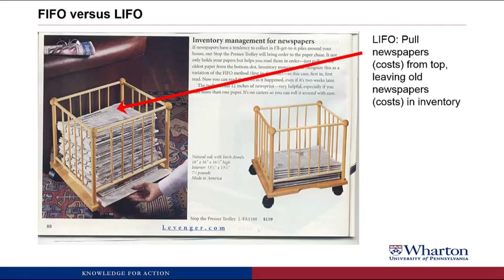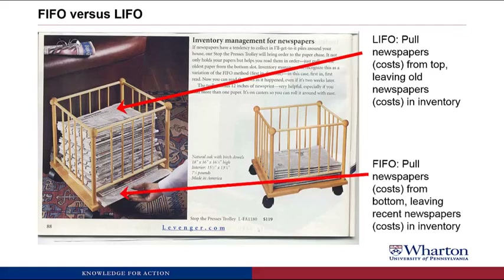So imagine this as a trolley full of invoices. Every time you pay money for raw materials, labor, or overhead, you put an invoice in the trolley. LIFO would say you pull the invoices or costs from the top, and those go into Cost of Goods Sold. The invoices or costs still at the bottom are the ones left in ending inventory — the oldest costs. For the FIFO method, which is really how this trolley was intended, you would throw your invoices into the trolley but then pull them from the bottom, taking the oldest costs out to Cost of Goods Sold, and what's left in inventory are the most recent costs. That's the difference between LIFO and FIFO — but remember, it's flow of costs we're talking about, not flow of goods.